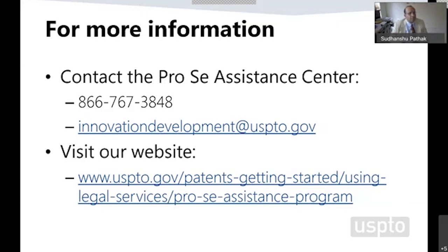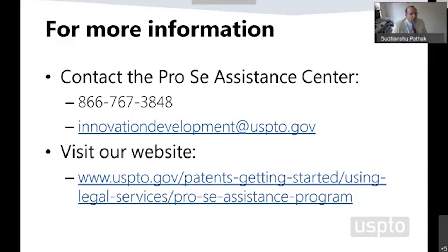Q: Does an applicant have a specific period before filing a provisional once the product has been made publicly known? If a product has been made publicly known, you have a one-year grace period to file your non-provisional application. You can also file a provisional application, but ultimately you will have one year to file a non-provisional. If the invention was made publicly available by yourself, you have additional protection; if it was made public by someone else, you have a one-year protection window.